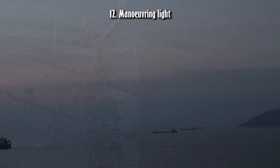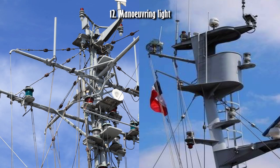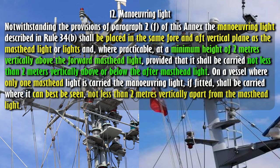Section 12 — Maneuvering Light. Notwithstanding the provisions of Paragraph 2(F) of this Annex, the maneuvering light described in Rule 34(B) shall be placed in the same fore and aft vertical plane as the masthead light or lights, and where practicable at a minimum height of 2 meters vertically above the forward masthead light, provided that it shall be carried not less than 2 meters vertically above or below the after masthead light. On a vessel where only one masthead light is carried, the maneuvering light, if fitted, shall be carried where it can best be seen, not less than 2 meters vertically apart from the masthead light.